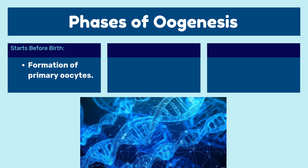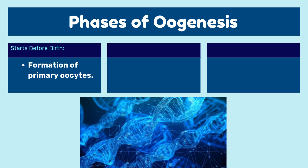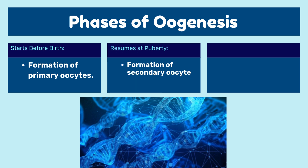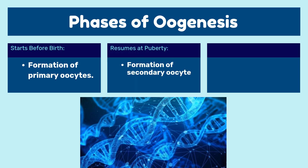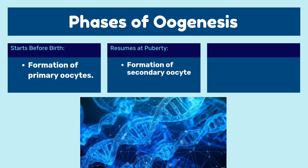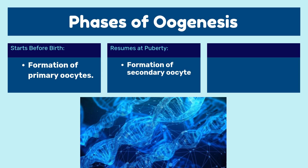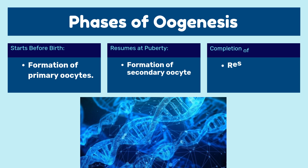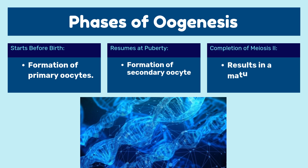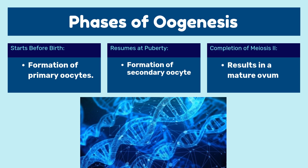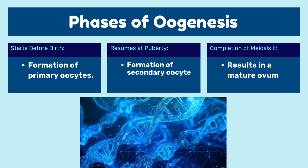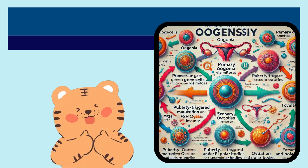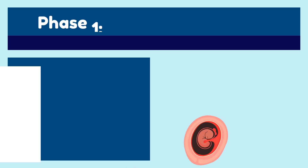Phase one starts before birth and results in the formation of primary oocytes. Phase two resumes at puberty and results in the formation of a secondary oocyte. Phase three is the completion of meiosis two and results in a mature ovum. Now we will discuss them in detail.